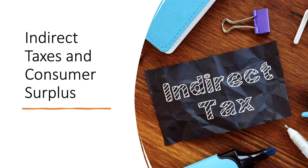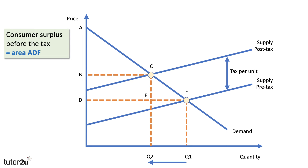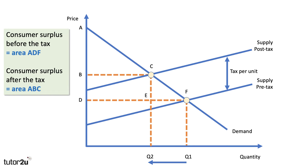Let's look first at the impact of an indirect tax imposed by the government. We'll consider a specific tax, shown by the vertical distance between the pre-tax supply and post-tax supply. Here's our diagram showing the impact of a tax. Consumer surplus before the tax, where the original price was D and the equilibrium point F at quantity Q1, was area ADF — the area underneath the demand curve and above the price. Because of the tax, the price has gone up to B.